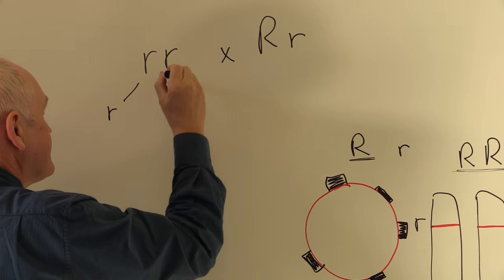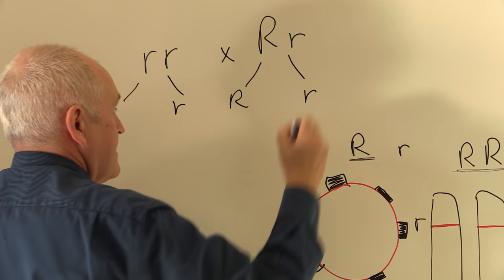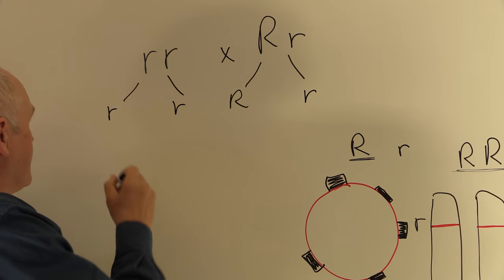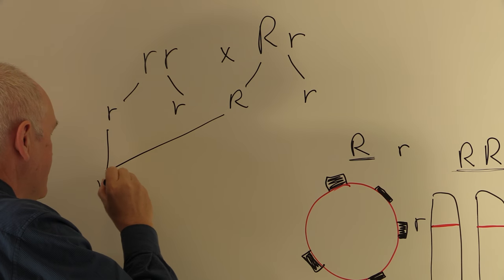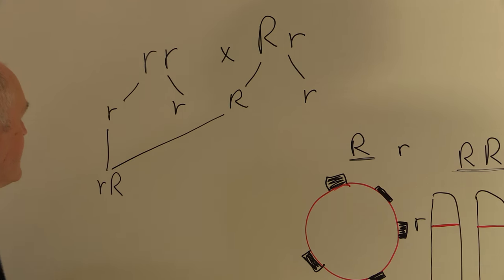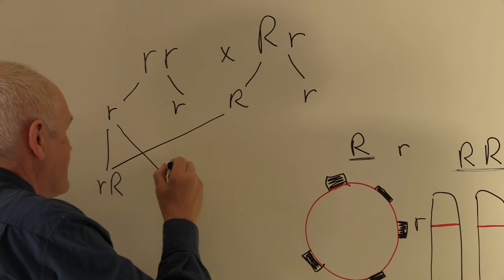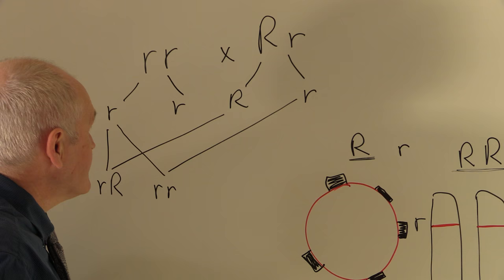Now to reproduce, the mother will make ova. The father will make sperm. And these are going to recombine. So one possibility is that combining with that, and that will give us a Rhesus positive fetus. Alternatively, that could combine with that one, and that will give us a Rhesus negative fetus.